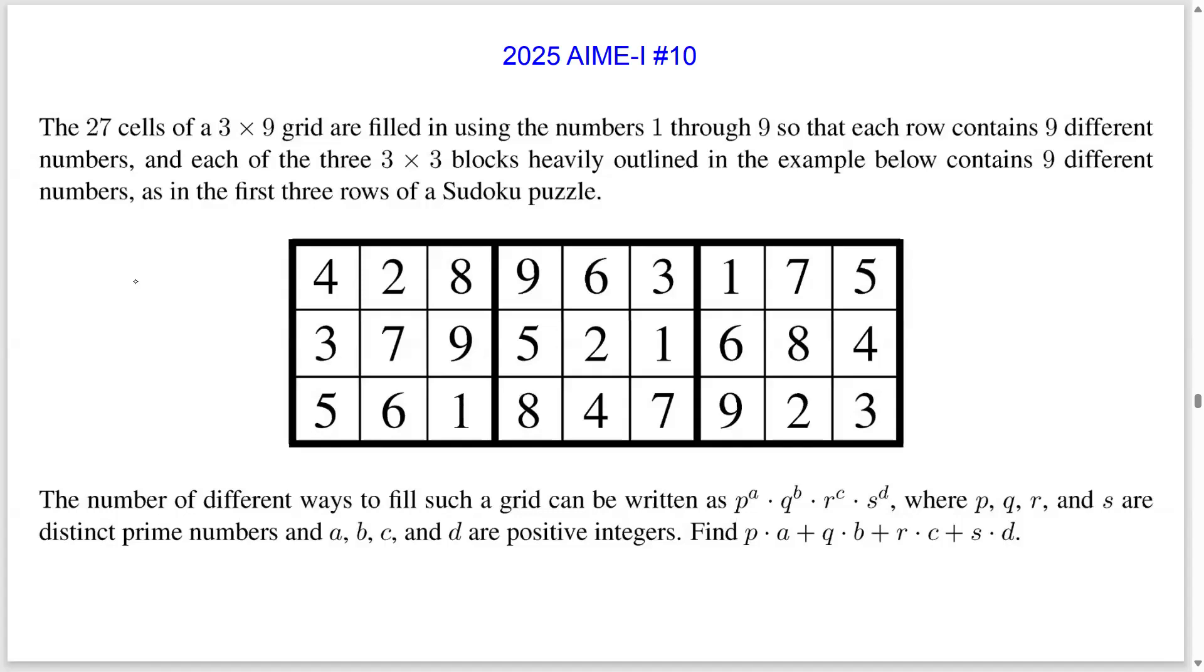There are a couple of observations that can simplify our computation. The first is that we can actually assume, without loss of generality, that the first row is 1 through 9 in that order.